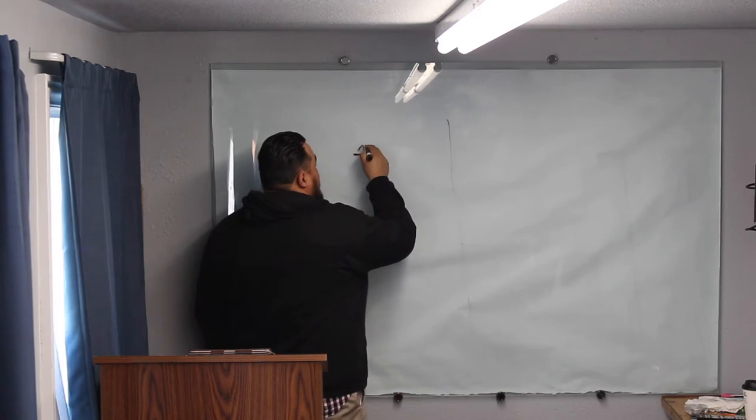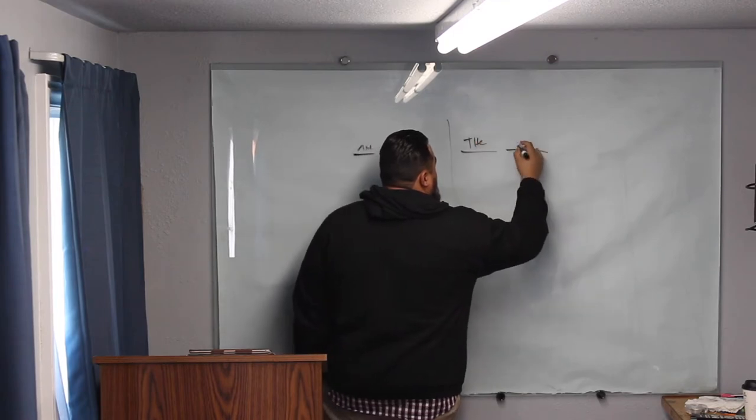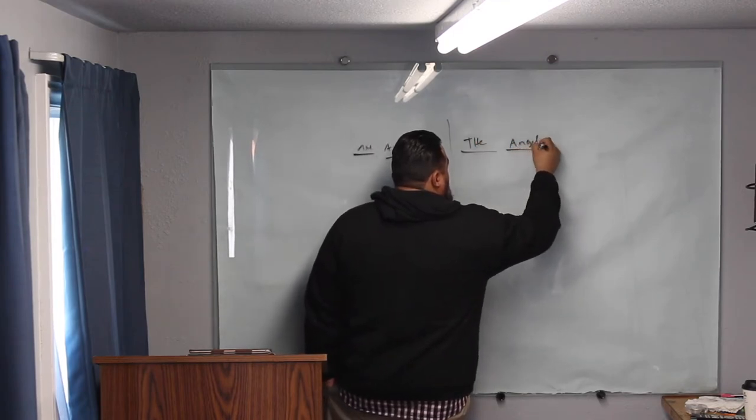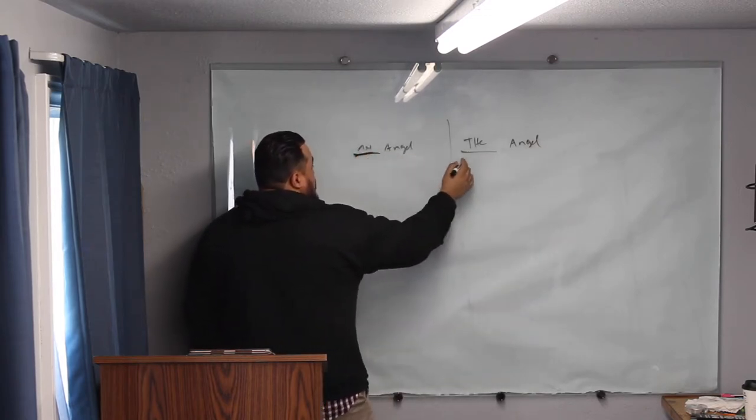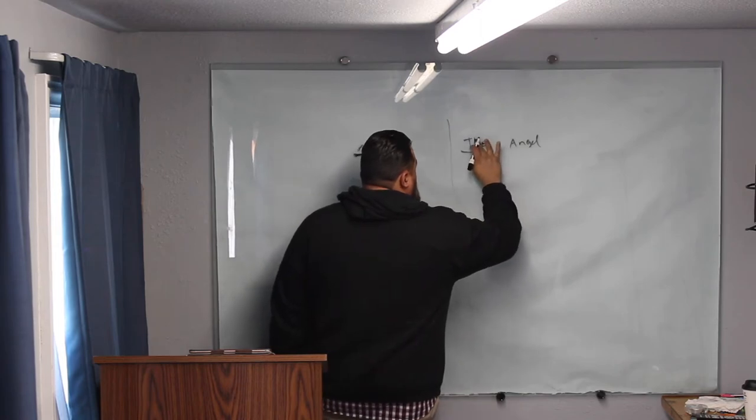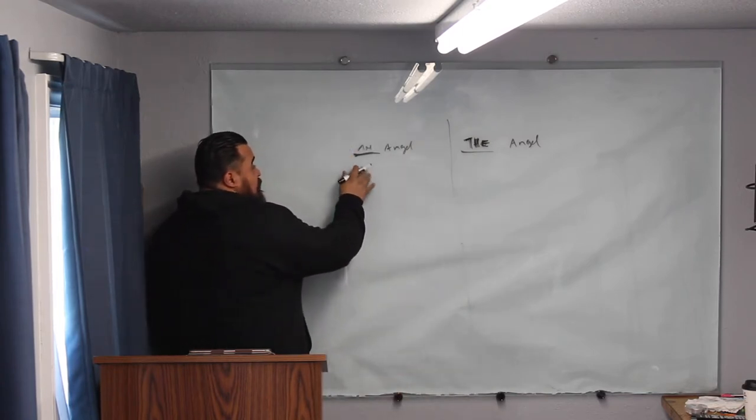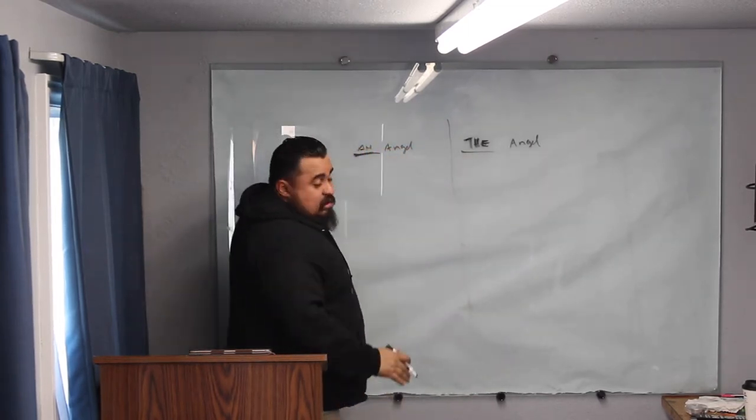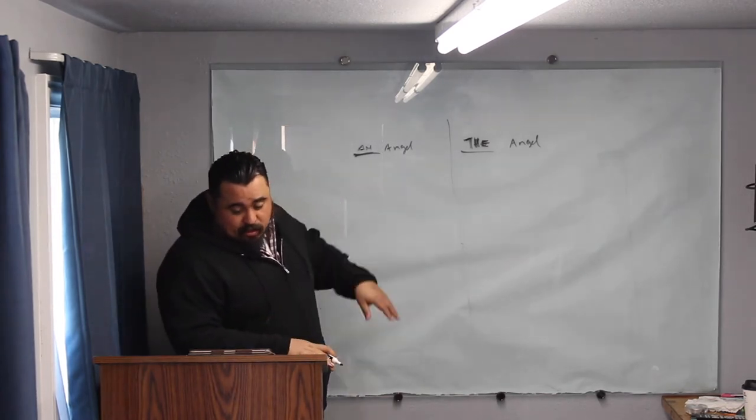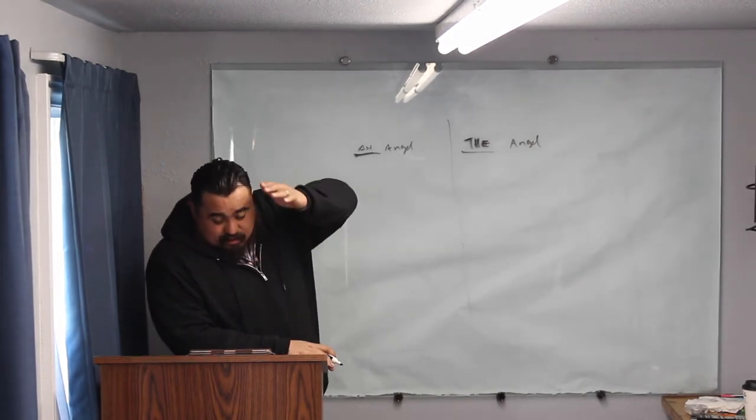Where do we make the distinctions? There's an angel and the angel. There's a very big difference between 'an' and 'the.' You can be a man or you can be the man, right? Very different things. When we look at the Old Testament, there's a clear distinction of an angel and the angel. We made a very clear distinction. And today, we'll start with Exodus. Let's go to Exodus 13:21.